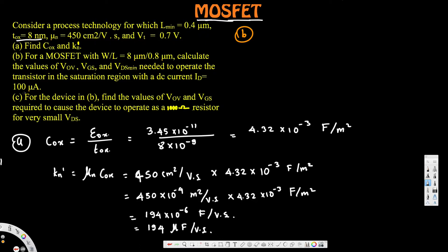To find V_OV, we use the drain current equation: I_D = ½ × k_n prime × (W/L) × V_OV². We have k_n prime = 194 μA/V² from part (a), W/L is given, and I_D = 100 μA. V_OV is what we need to find, so we rearrange this equation.